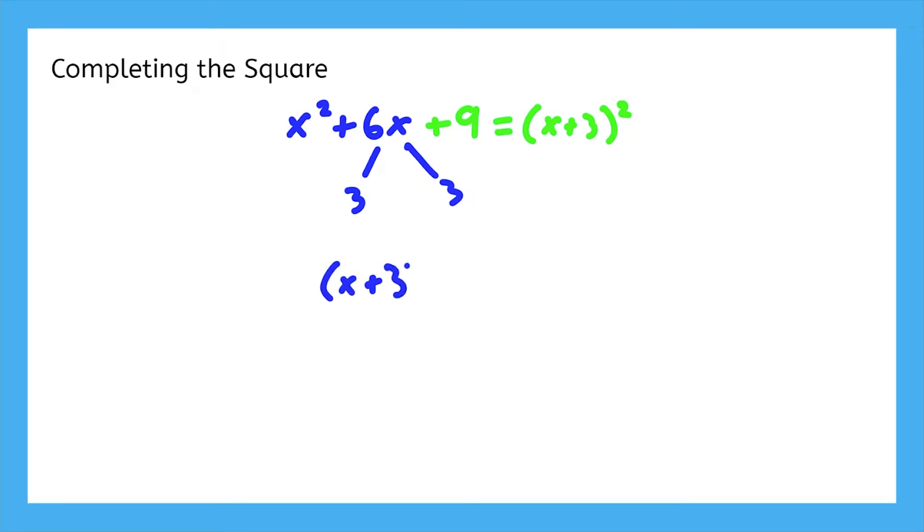We can even check it to make sure. x times x makes x squared. x times 3 makes 3x, and so does 3 times x. And 3 times 3 makes 9. Those 3x's will combine to make 6x, and we get back to where we were before we factored.